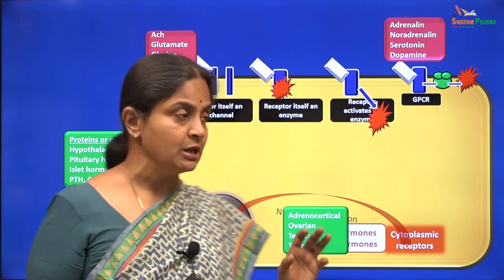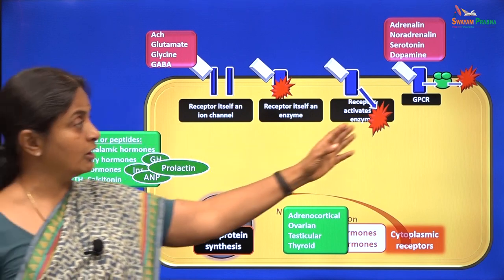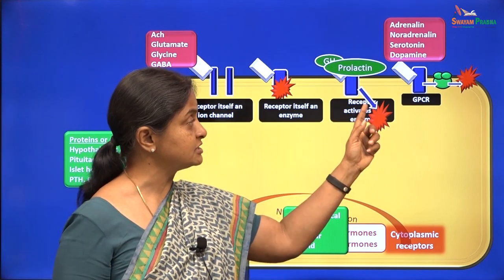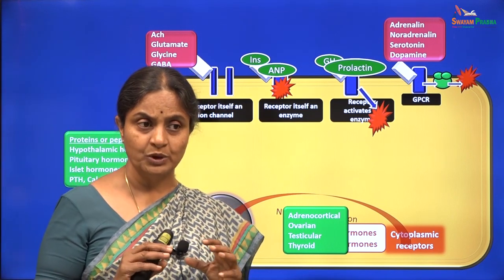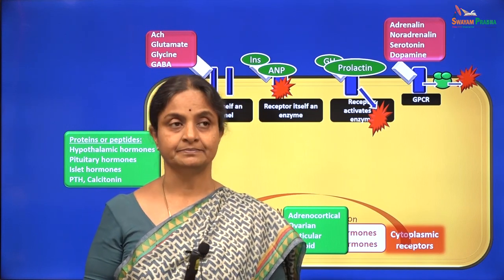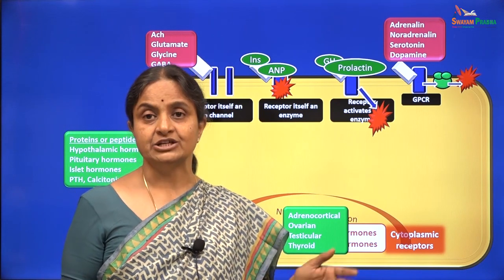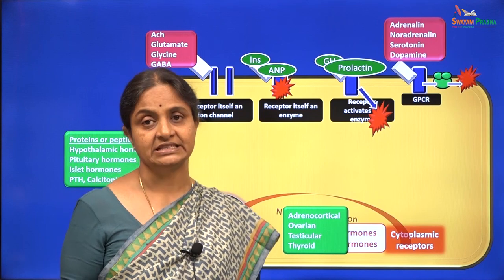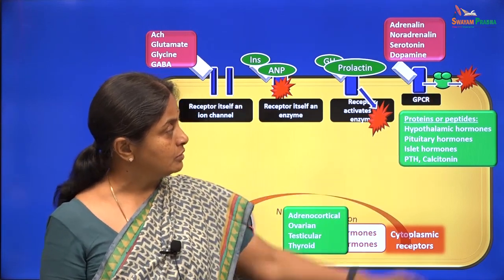When we come to the protein and peptide hormones, we will take four of them away from the list. Once we make these exclusions, the rest of them will all act through G-protein coupled receptors. And what about these exceptions? Growth hormone and prolactin act through receptors which activate an enzyme directly. Insulin and atrial natriuretic peptide — a hormone secreted from the endocardium of the atria — causes vasorelaxation and natriuresis, that is more excretion of sodium in the urine. These two act on receptors where the receptor itself is an enzyme. The rest of the protein and peptide hormones act through G-protein coupled receptors.